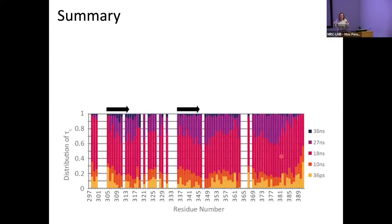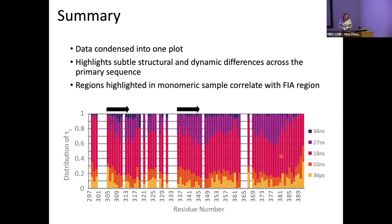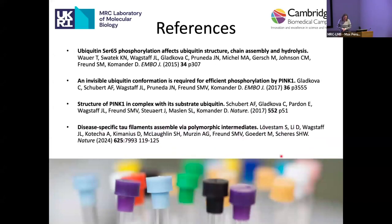We can condense all of that information into one plot, making the dynamic processes in our disordered system much easier to understand. This really highlights the subtle structural and dynamic differences across the primary sequence, and is applicable to tau but also to other IDP systems. The regions highlighted in the monomeric sample correlate with the FEAR region that Sophia discovered in her time-resolved cryo-EM work. If you want to do some more reading, here are the references.